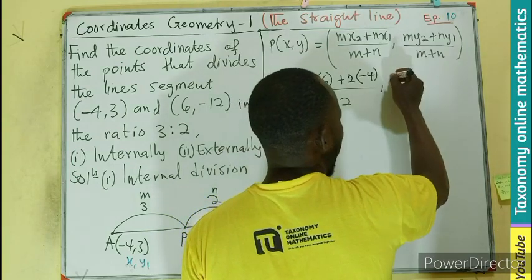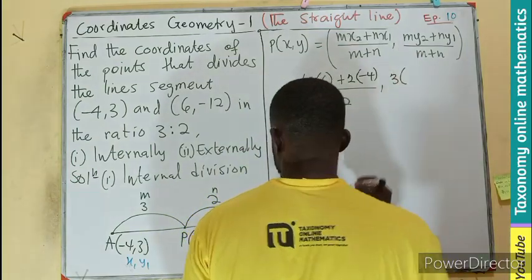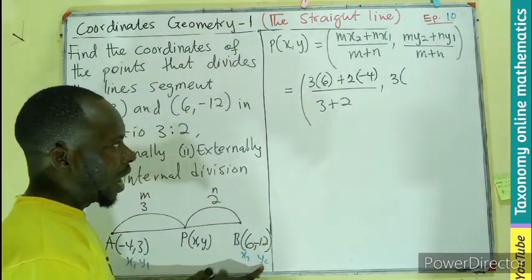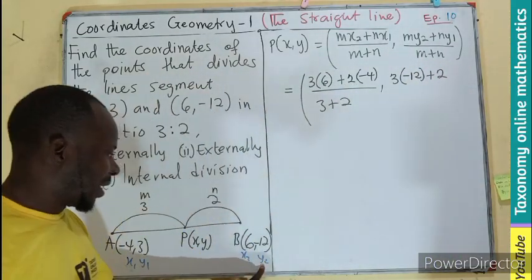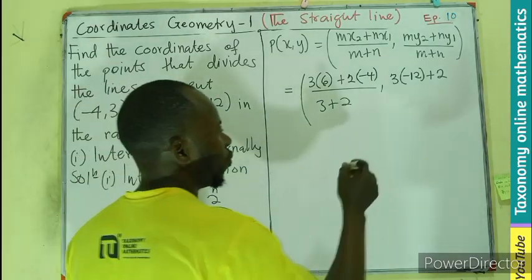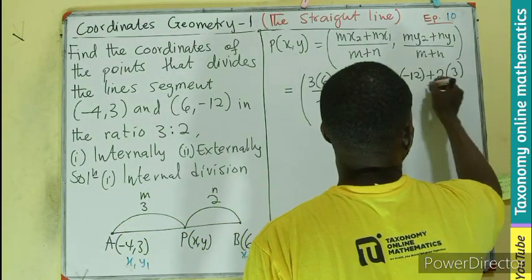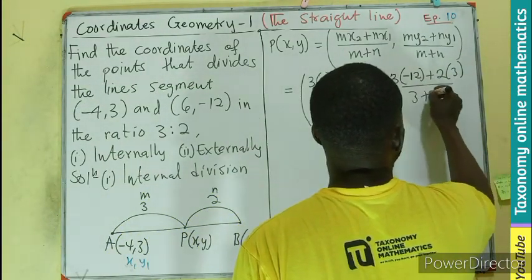We do same for the Y coordinate. 3 times Y2, where is the Y2? -12. 2, which is N, times Y1, which will be 3, all divided by 3 plus 2.